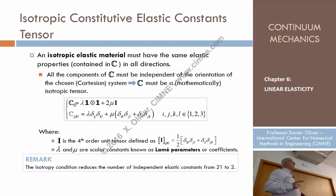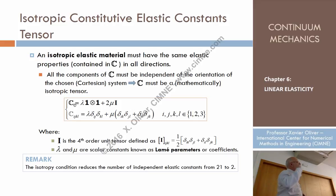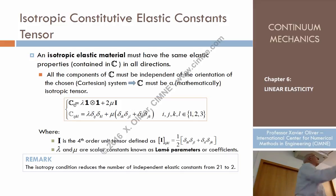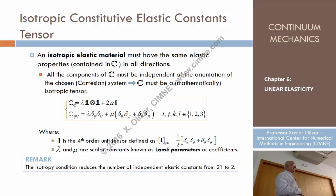A non-zero vector is not isotropic, because as soon as I change the basis, the components of the vector change. There is a family of second-order tensors that are isotropic — whose components do not change as we change the basis. Do you remember which ones they are?